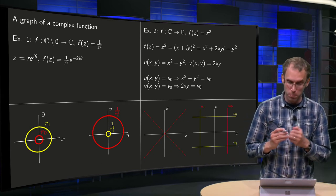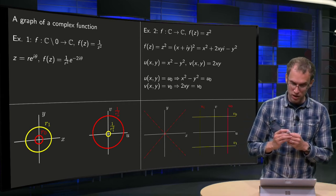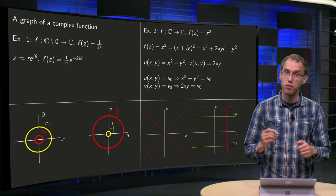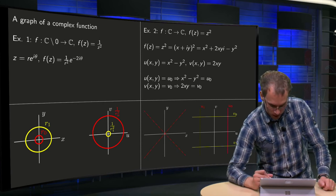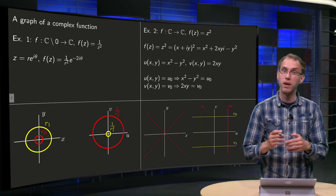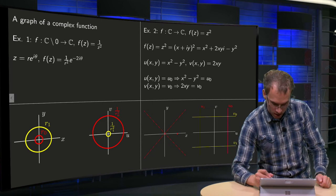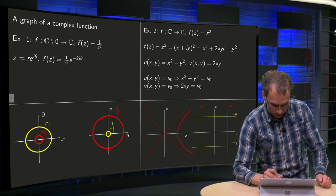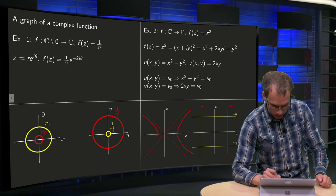If u0 is positive, they intersect at x = √u0 and y = 0, so that's over here. And for x and y very big, they approach the line y = x. So they more or less look like this and that.